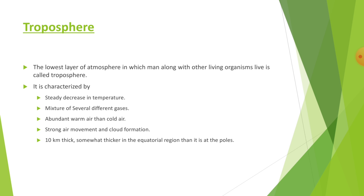The troposphere is characterized by a steady decrease in temperature and is a mixture of several different gases, most of which are fairly constant in their abundance. The composition of the troposphere, excepting water vapor and airborne particles such as dust, includes strong air movement and cloud formation.